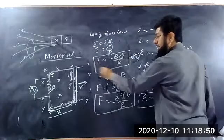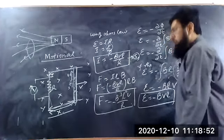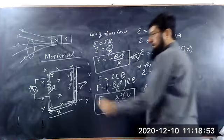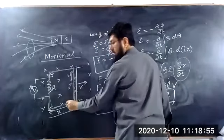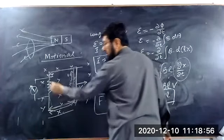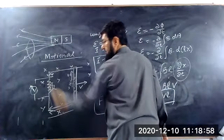This is the induced current, and this induced current is flowing in this circuit across the resistor R. This is the induced current.